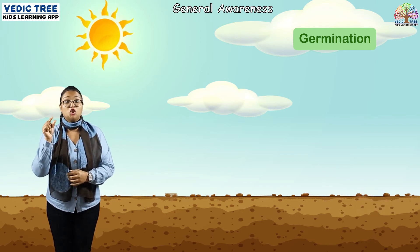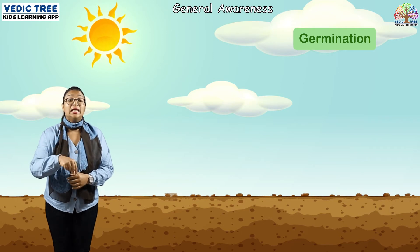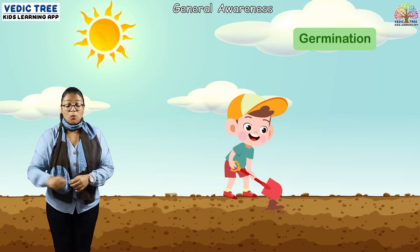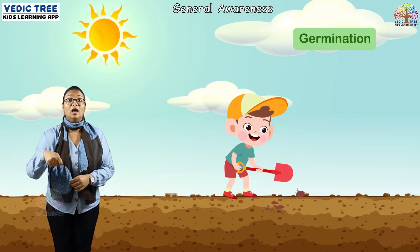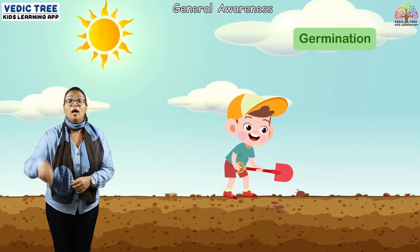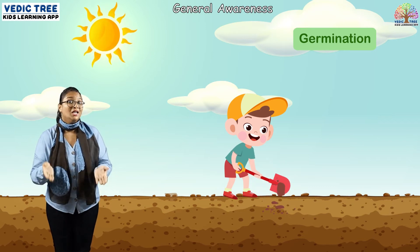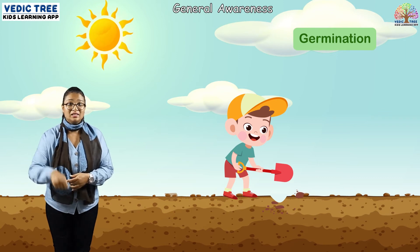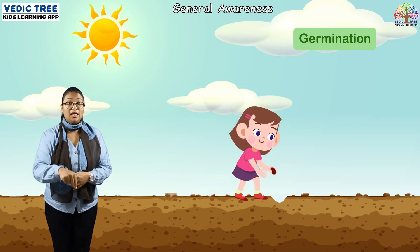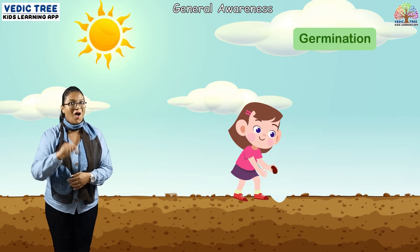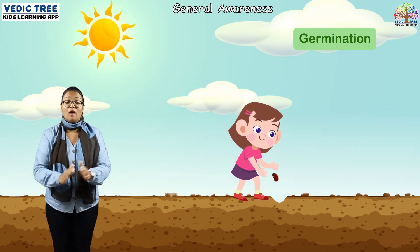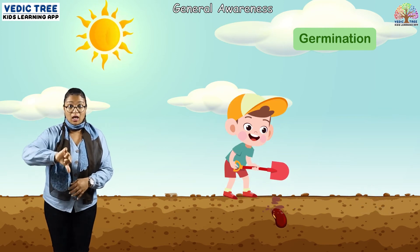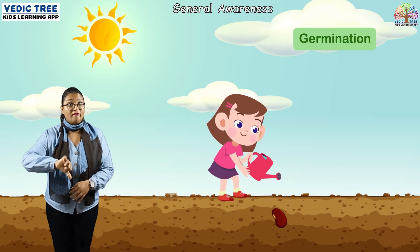We have to sow the seed in the soil. First, we dig a pit in the soil. We sow the seed in the soil, and then we cover the seed with the soil. We need to water the seed every day.